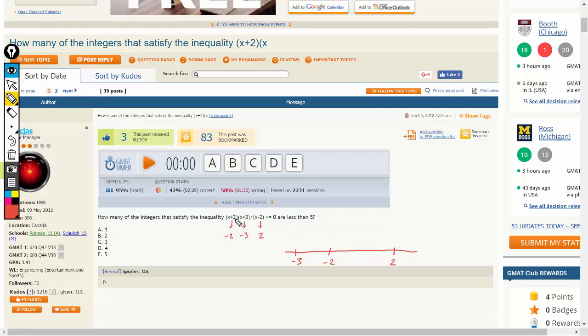Now imagine there are these three terms. When the value of x is more than 2 in this zone, all three terms are positive. Beyond 2, this term would be positive, and therefore the other two would also be positive. So we would have three positive signs, which means a plus sign here.